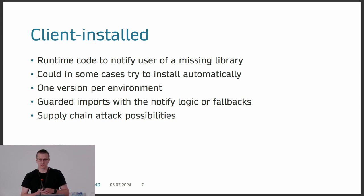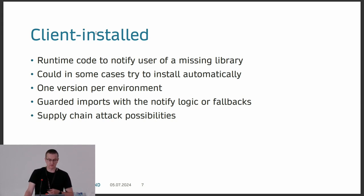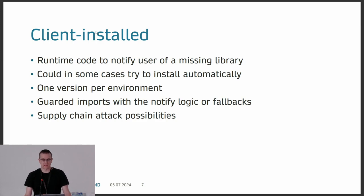For client-installed libraries, you can notify a user about a missing library or in some cases try to install automatically. Of course, this brings some problems — the user might not have network access at the time, or there might be other problems preventing automatic installation. In this case as well, there's one version per environment, so you can't have multiple versions available. If the user already has, say, Pandas 1.0, you can't have a 2.0 request that might break other workflows for the user.